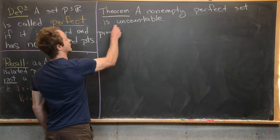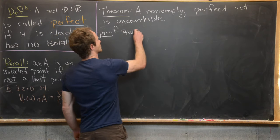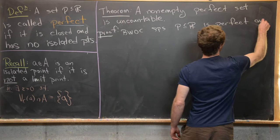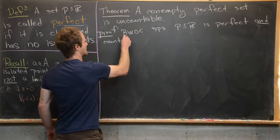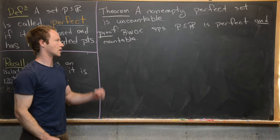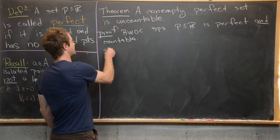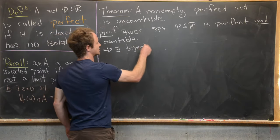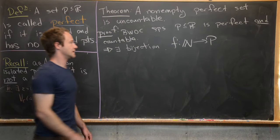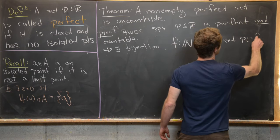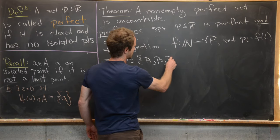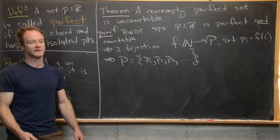We're going to do this by way of contradiction. Suppose P is a subset of real numbers that is perfect and countable. The fact that it is countable means there exists a bijection F from the natural numbers onto P. Setting P_i equal to F(i) allows us to write the set P as {P1, P2, P3, ...}, so we have a list of every element in P.